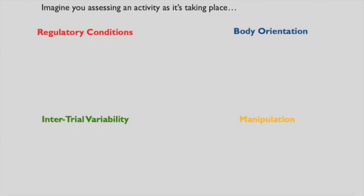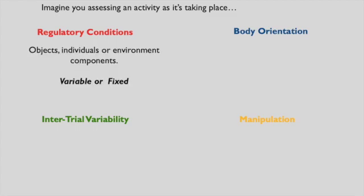As we dig into the components of this taxonomy, there are four things I'd like you to keep in mind. As we think about a skill or go to classify a skill, I want you to think about that skill as if it's actually taking place live in front of you. When we go to classify that skill, we can classify it based on these four terms. We can classify it based on things called regulatory conditions, which refers to objects, individuals, or things about the environment that can either remain fixed or be variable, meaning they may change.